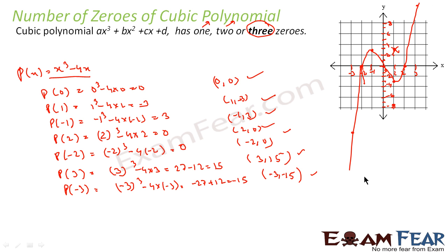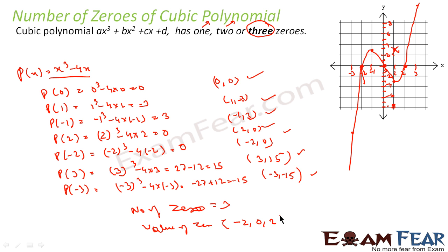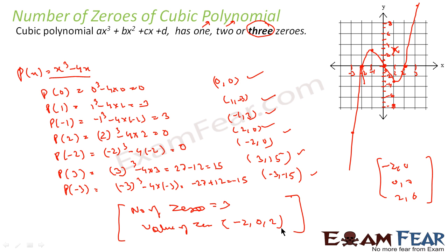Now since the graph is going up at the ends and won't meet the x-axis again, we can see that at 3 points this polynomial function meets the x-axis. So there are three zeros. The number of zeros is equal to 3. The values of those zeros are -2, 0, and 2, because the points (-2, 0), (0, 0), and (2, 0) are where the graph meets the x-axis. So the x-coordinates — the zeros — are -2, 0, and 2.